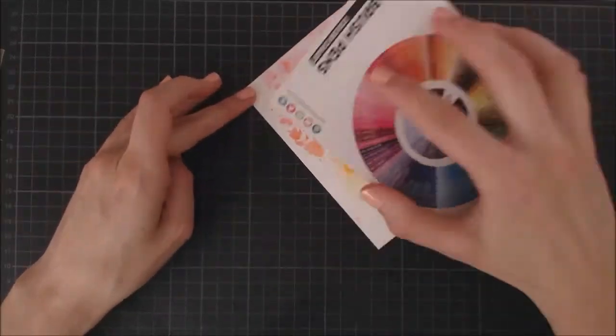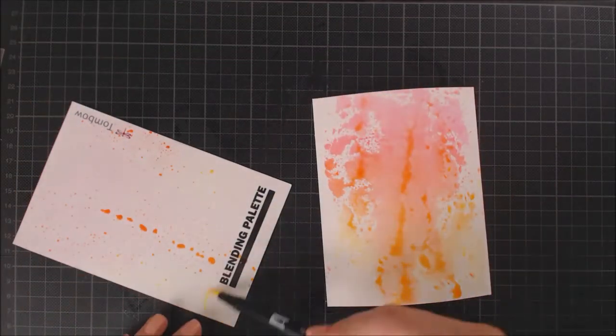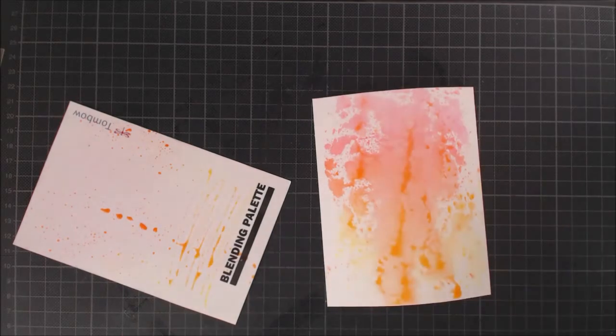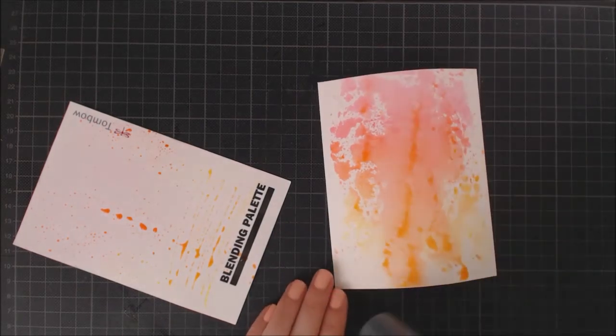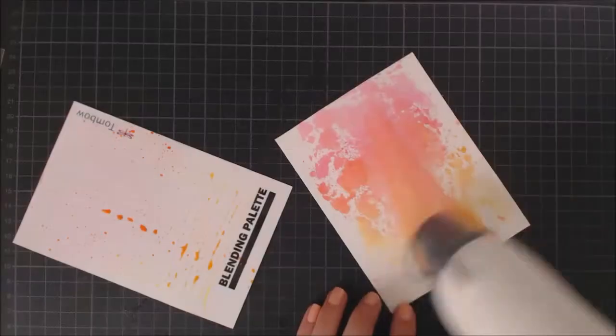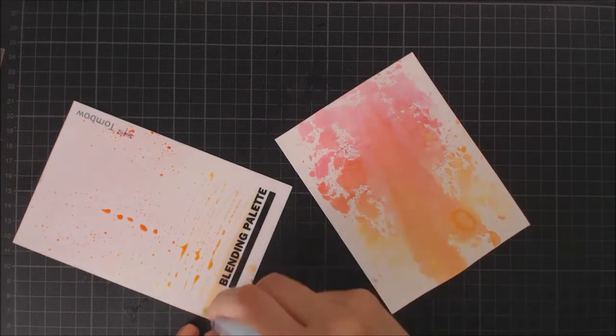I'm going to speed up the drying process with my heat tool and I'm going to be repeating this process until I'm happy with the results. I love to use my heat tool to completely dry each layer because this way you can get a lot more texture on your background.